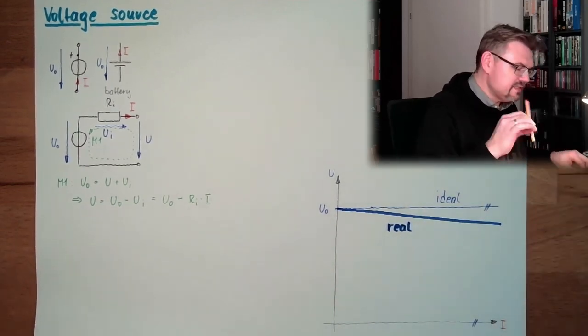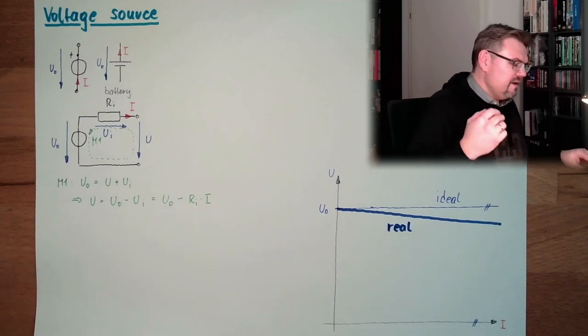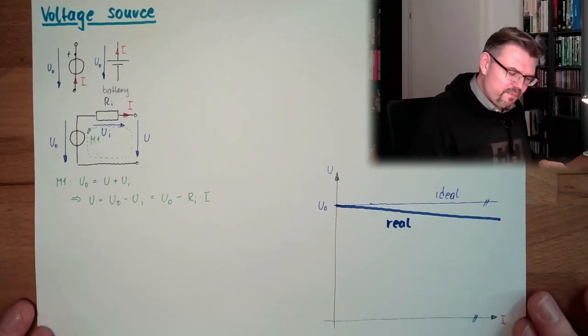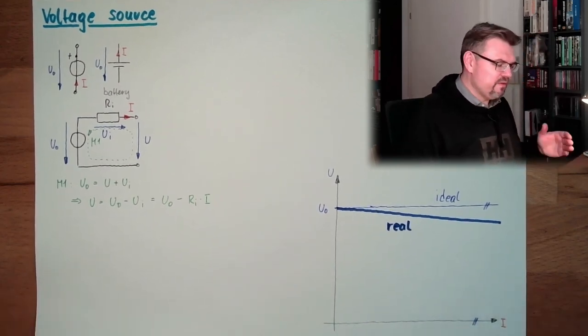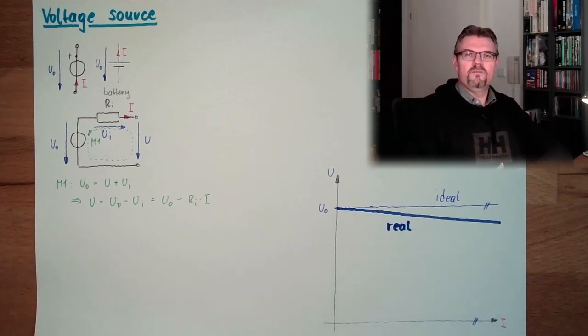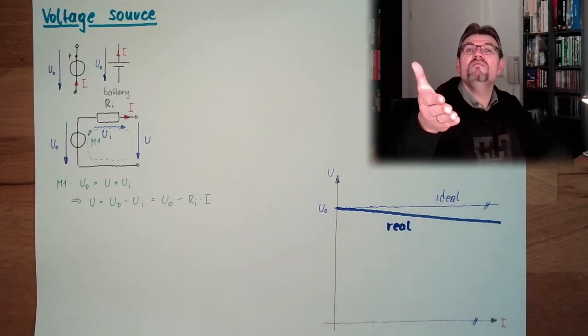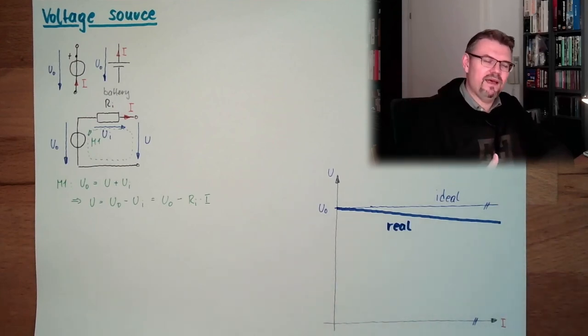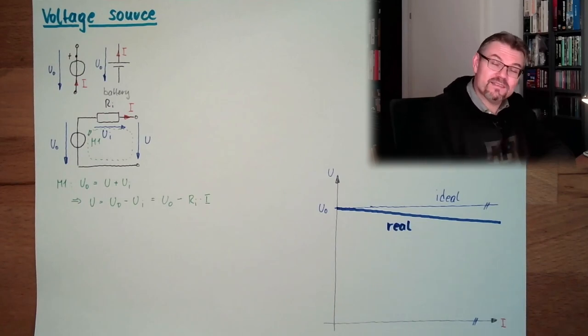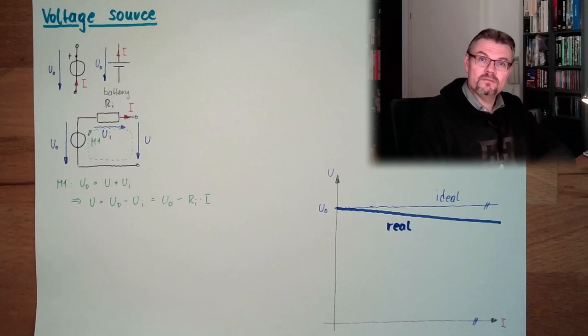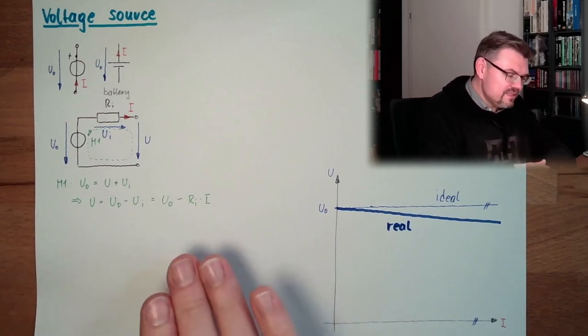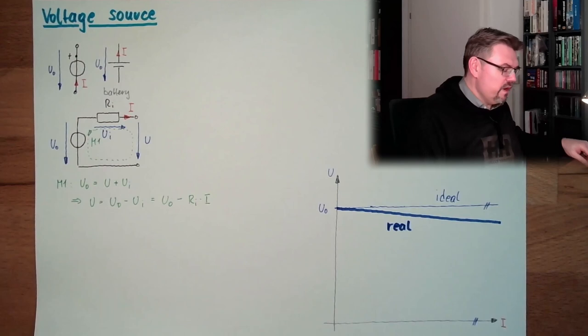Yeah, you cannot avoid it. It's simply there. These are because of the behavior of the power source, of the voltage source. You cannot just remove it. There is no resistor inside. It behaves just like a resistor. It just behaves like that. It is not really built in. Nobody would build in an RI.